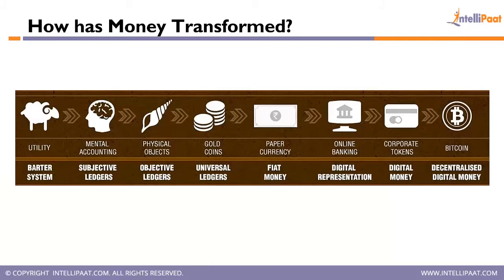Let's look at a bit of history — how money was transformed and where we are today. In the prehistoric age, it all started with the barter system. The barter system was all about the exchange of goods and services in return for another set of goods and services. Somebody gives one commodity to another and in exchange expects a different commodity back.